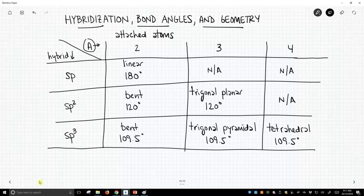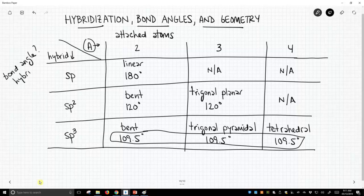Now as you see, the bond angle as we go across this row stays constant. So what determines bond angle? Well, it's the hybridization. The hybridization alone determines the bond angle.